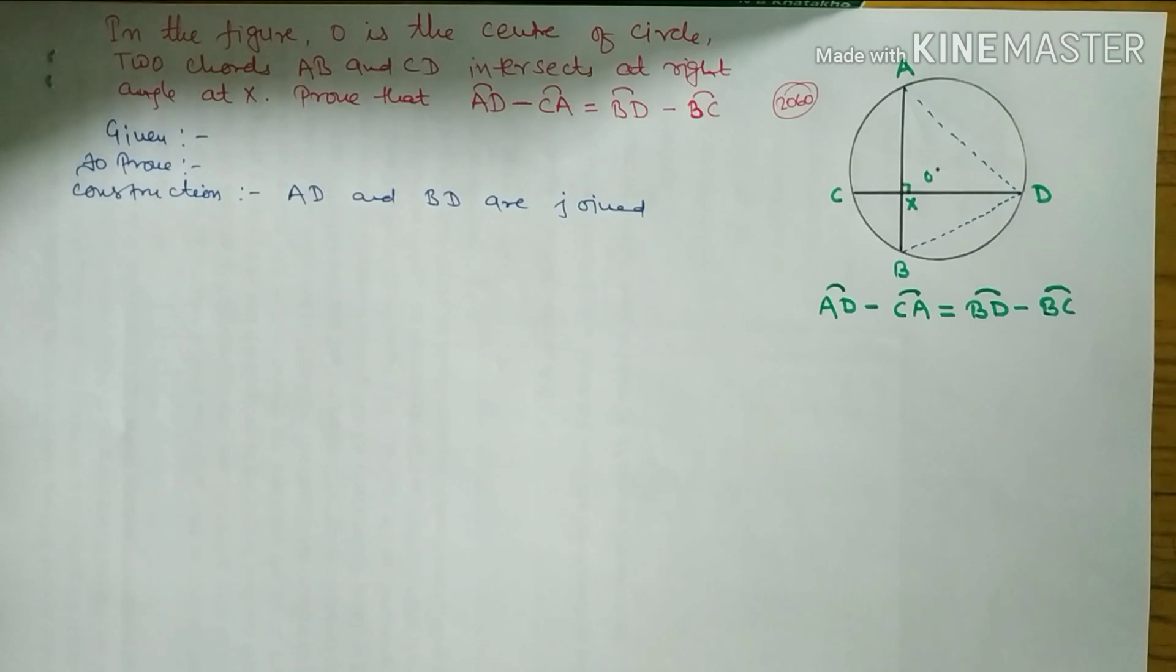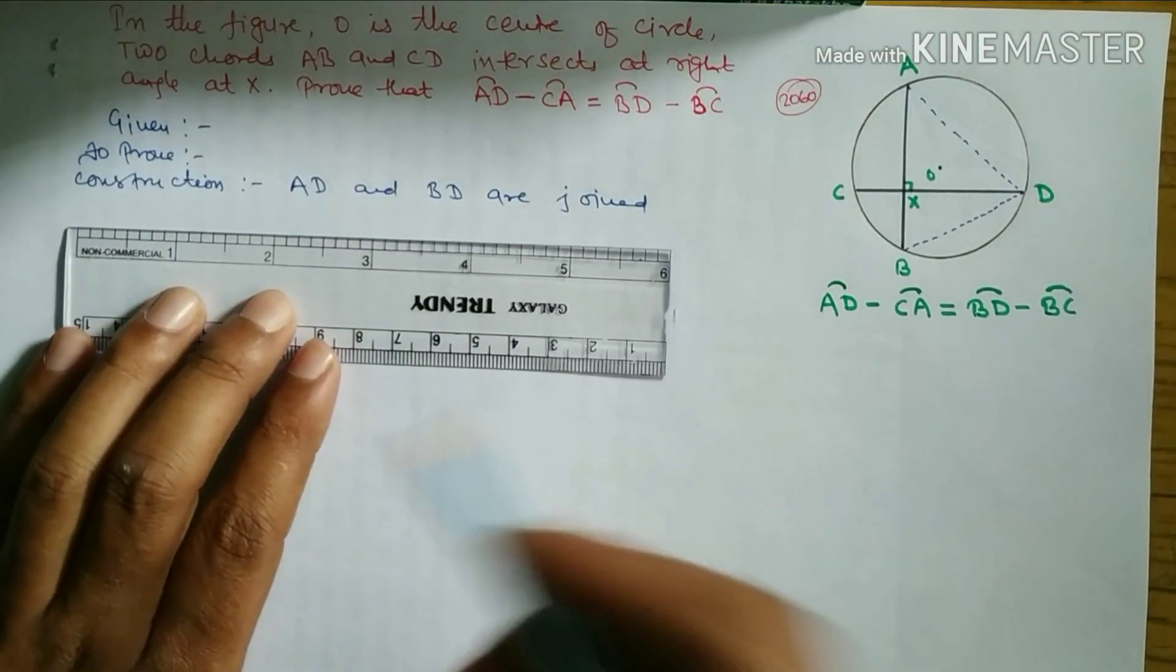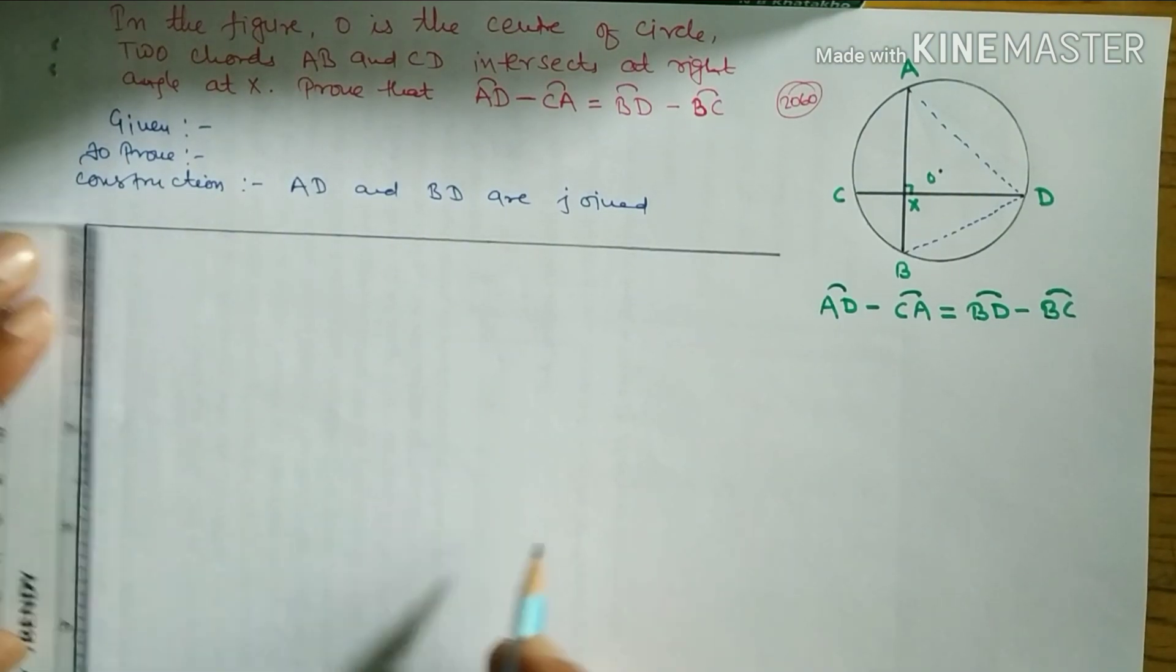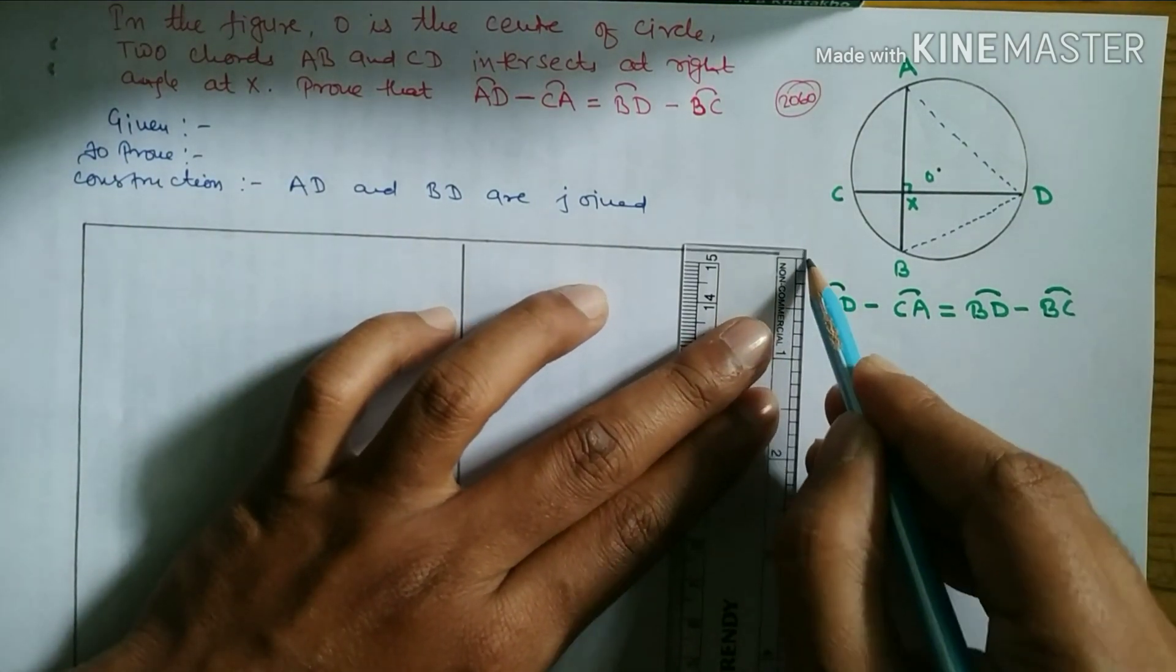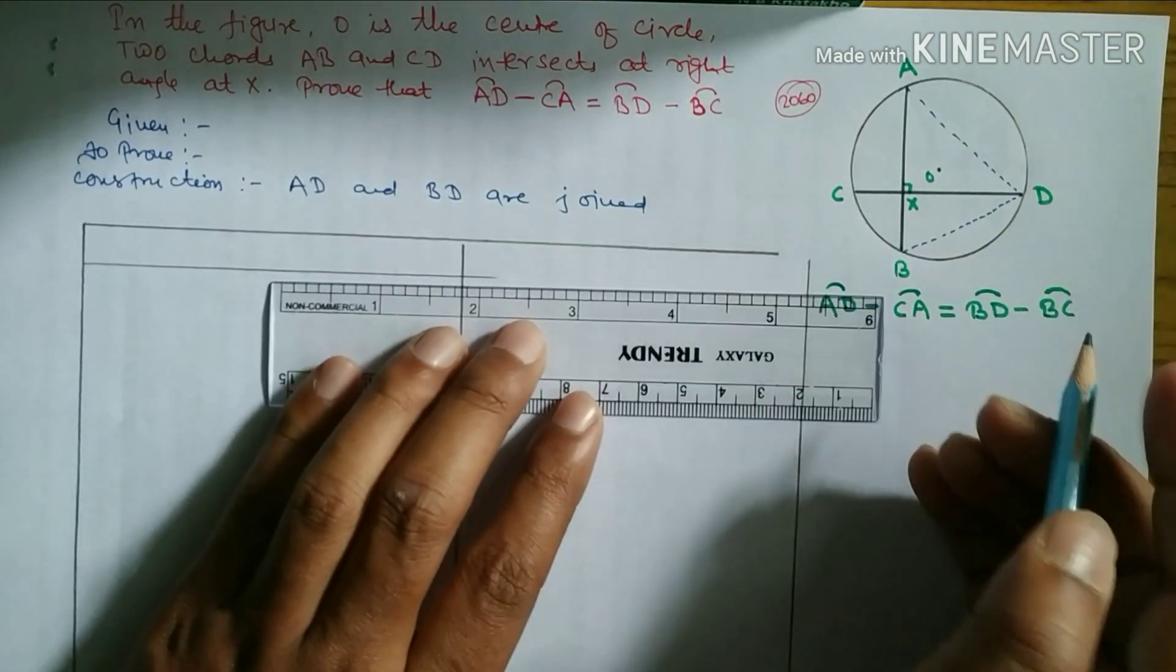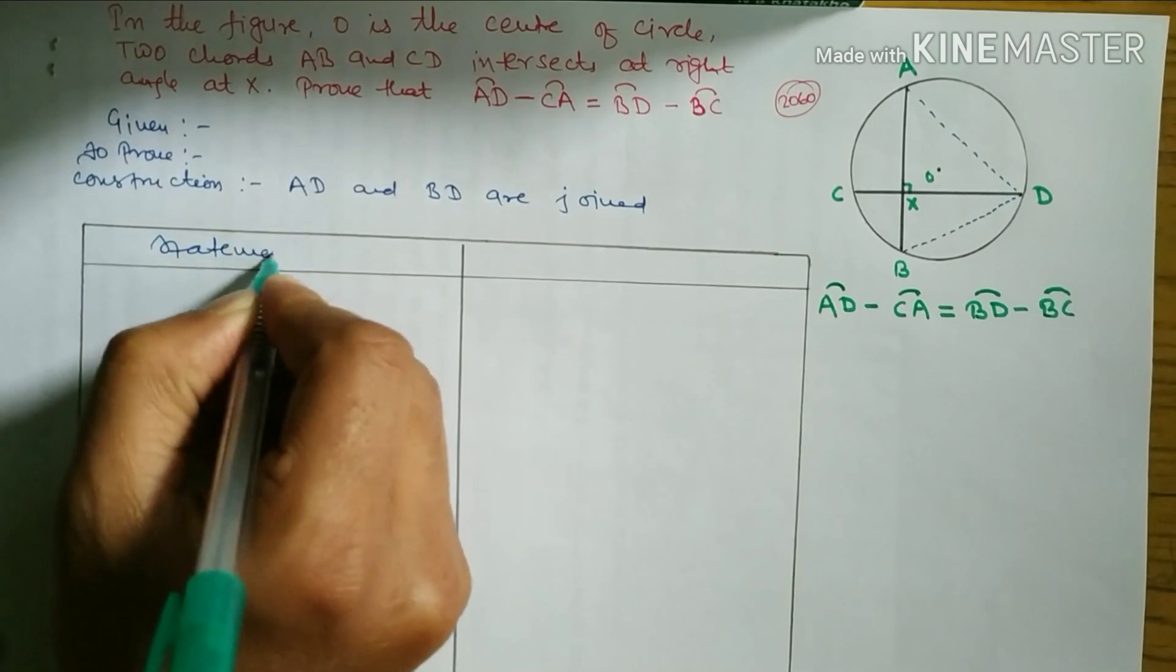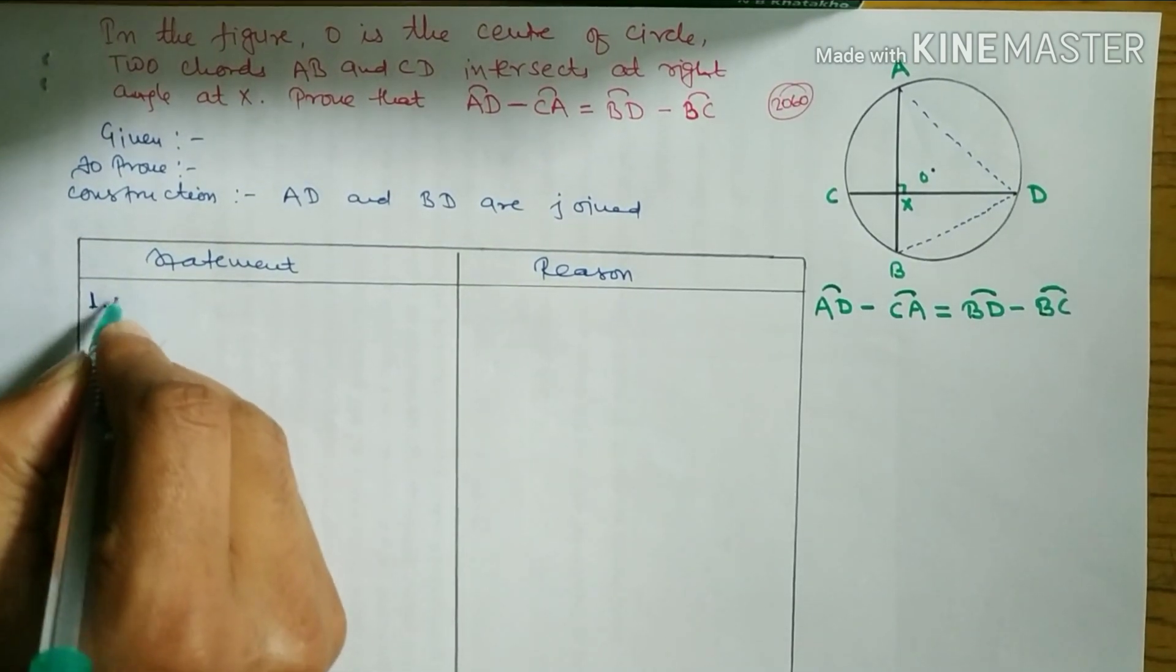After this we have to draw one table. To the left side we have to write down statement and to the right side you have to write down the reason. Okay, this table is ready now.